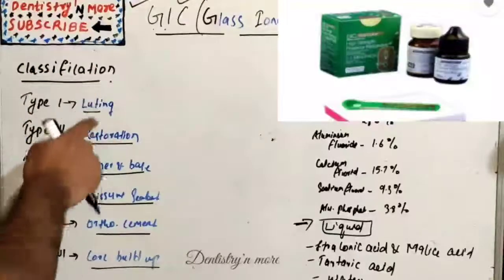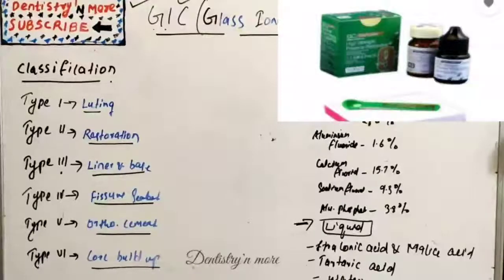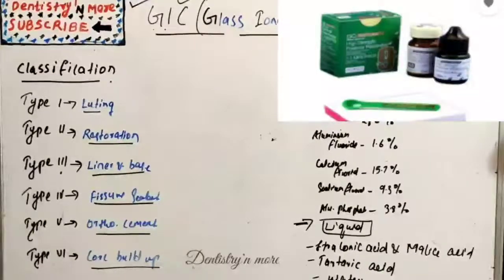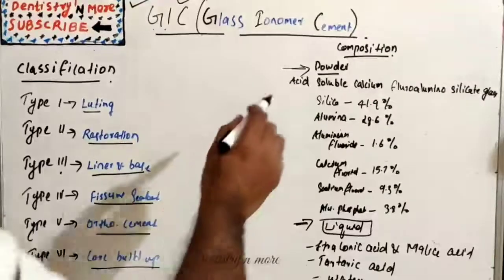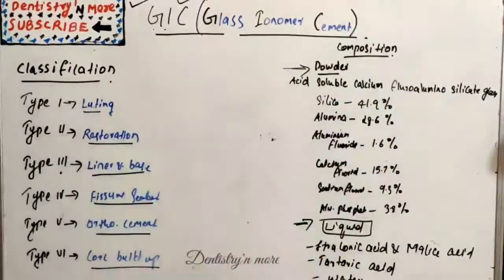The composition: as I said, it has got silicate glass particles and acid. The powder includes, or we can say, acid-soluble calcium fluoroaluminosilicate glass.